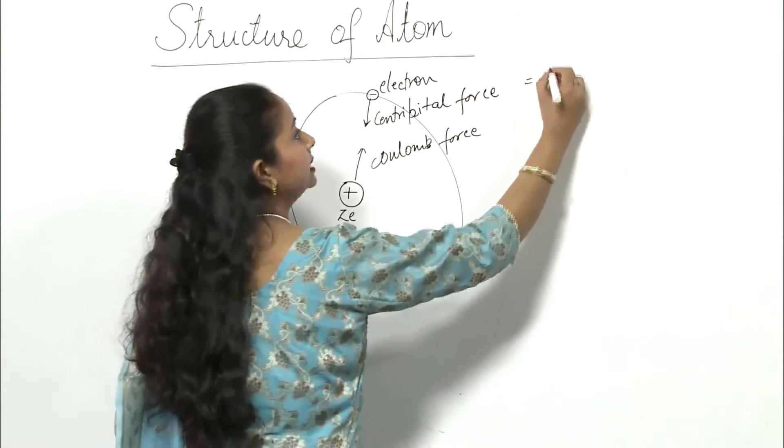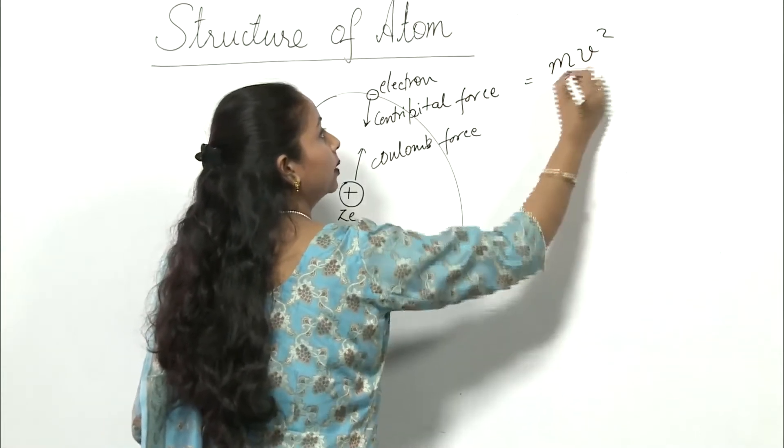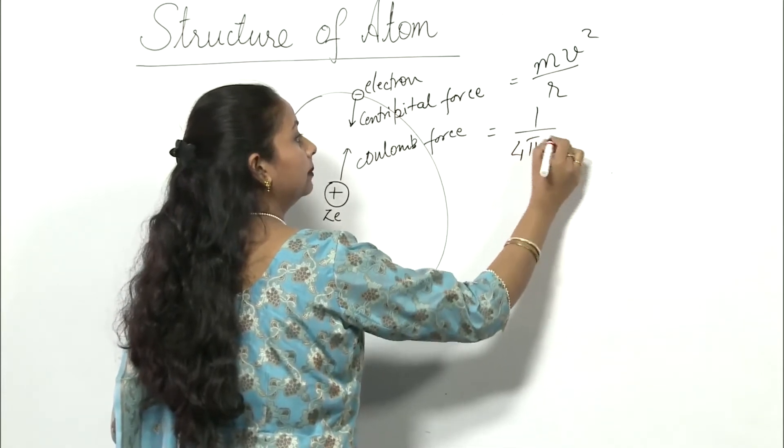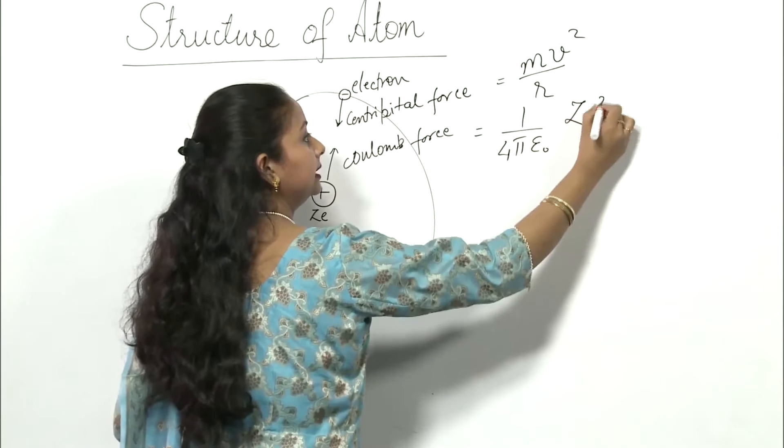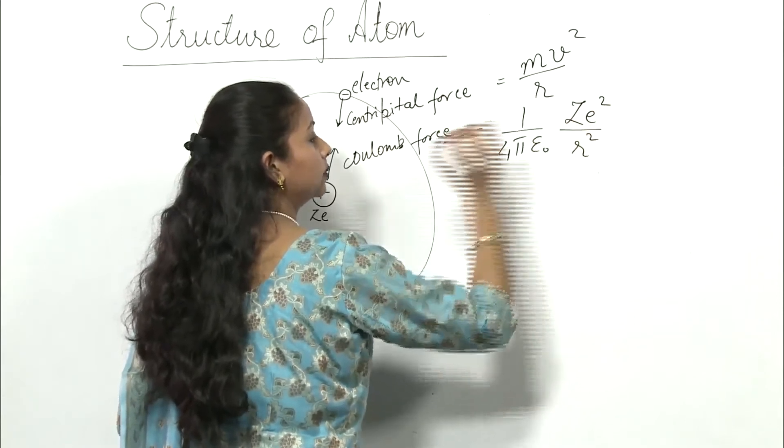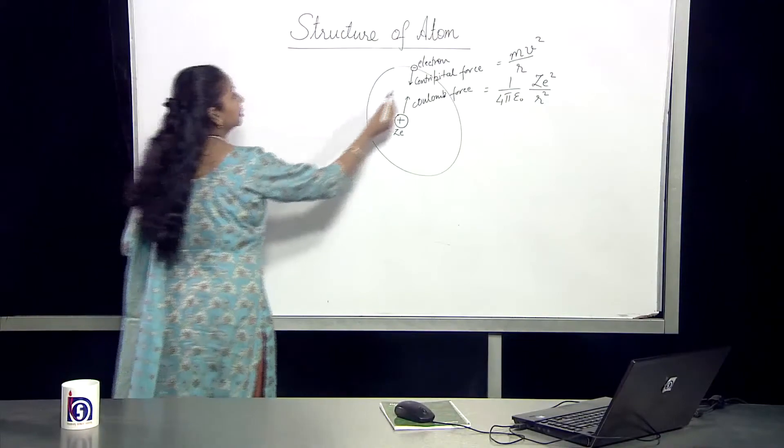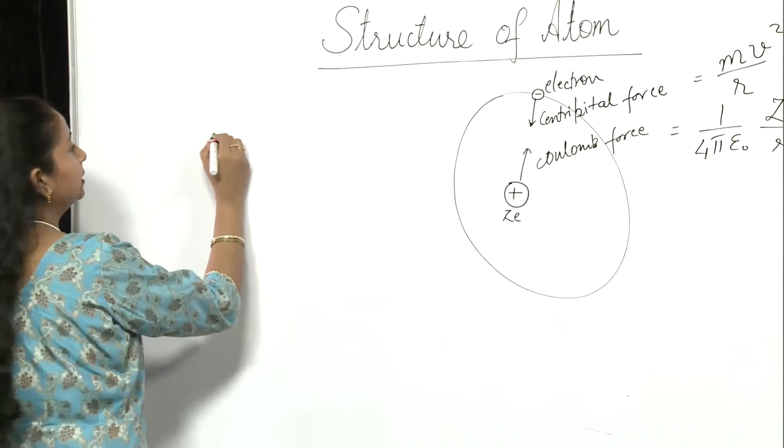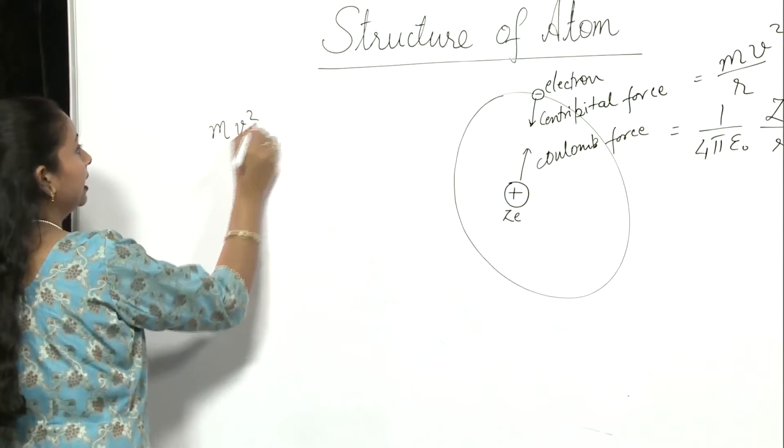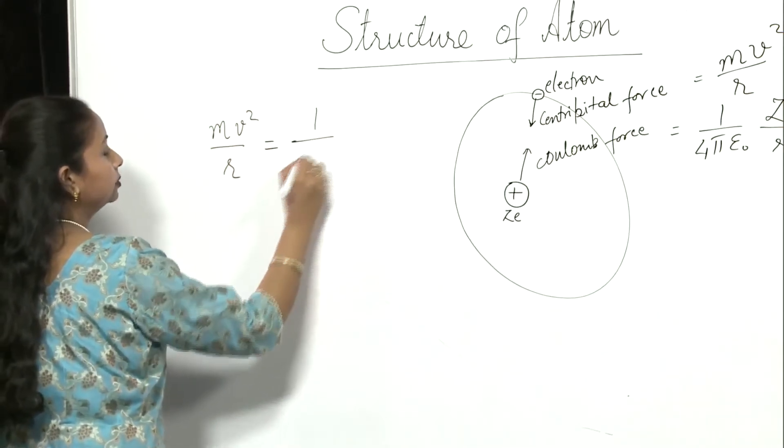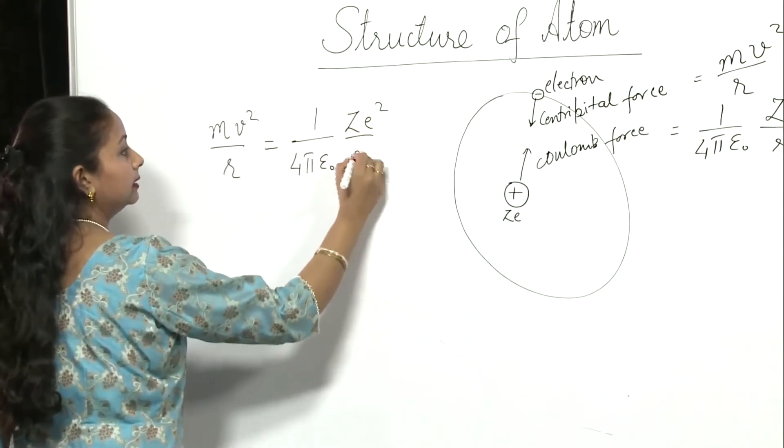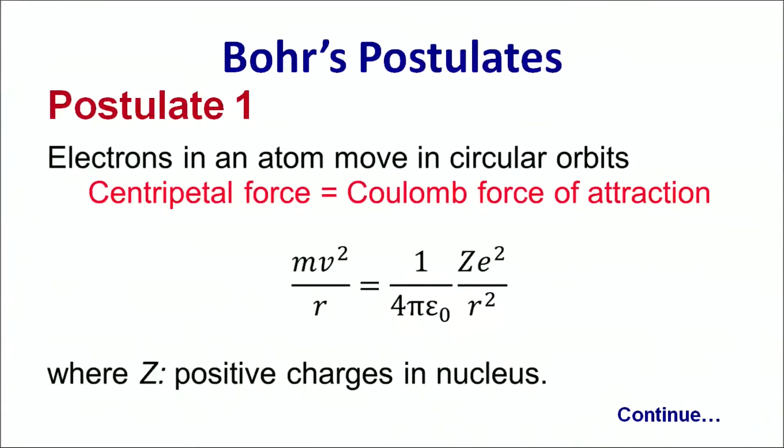This centripetal force is equal to mv²/r and the Coulomb force is given by 1/(4πε₀) × ze²/r². So in order that the electron is orbiting around the nucleus, these two forces should be equal. That is, mv²/r should be equal to 1/(4πε₀) × ze²/r². So when the electron is revolving round the nucleus, these two forces will compensate and it will have a constant energy.